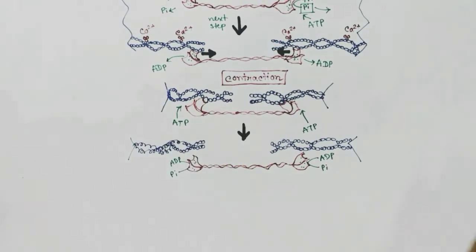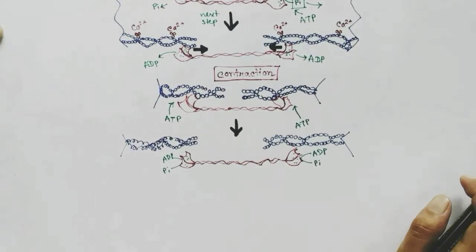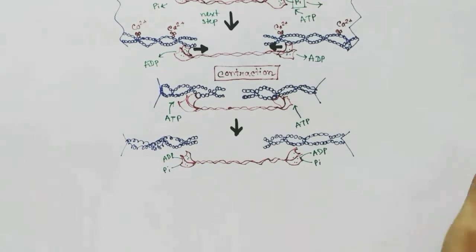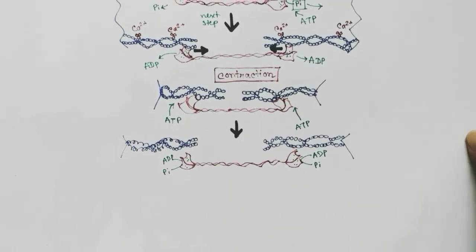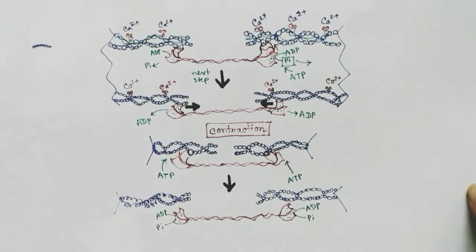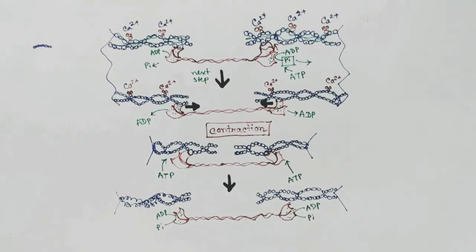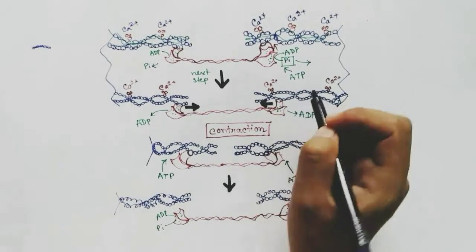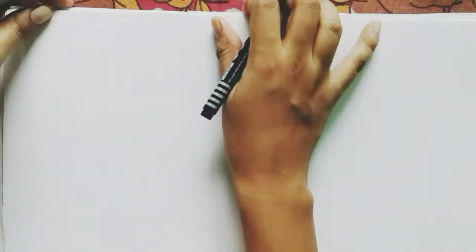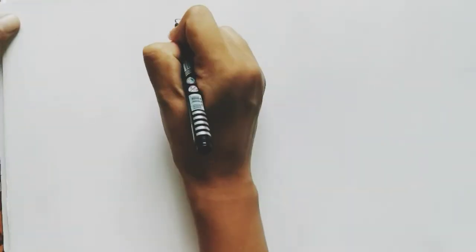The theory by which this is described is called the sliding filament theory, as the actin filaments are sliding over the myosin filaments.